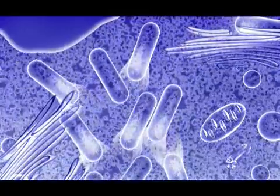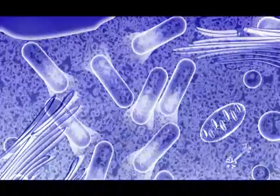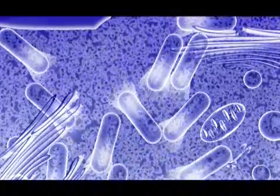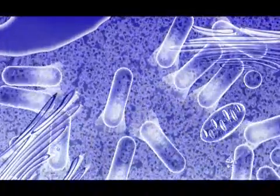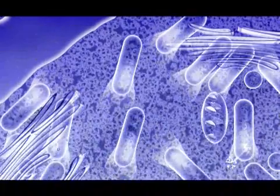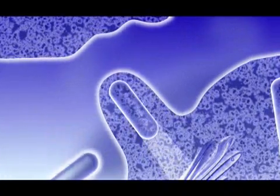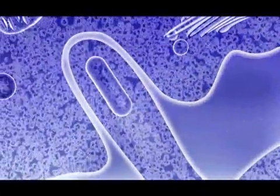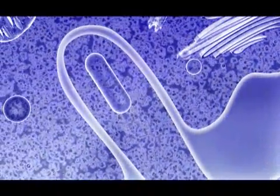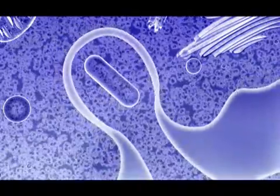Listeria reach the cell membrane using actin-based motility. Propelled by actin polymerization, the bacteria push into the cell membrane, resulting in a protrusion called a Listeria pod. Cell-to-cell movement of Listeria occurs when a neighboring cell phagocytosis the Listeria pod, thereby allowing spread of Listeria without exposure to antibodies or other immunoactive molecules.